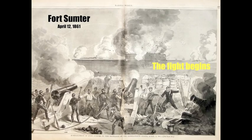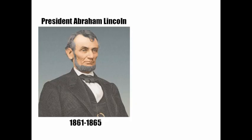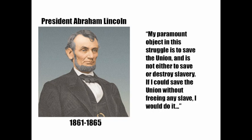The fighting did begin at Fort Sumter on April 12, 1861, and Abraham Lincoln became the commander-in-chief overseeing this first war between the states. He made his intention clear: 'My paramount object in this struggle is to save the Union, and is not either to save or destroy slavery. If I could save the Union without freeing any slave, I would do it.' Abraham Lincoln was not a pure abolitionist — he simply wanted to keep the Union together, but to prevent slavery from moving further west.